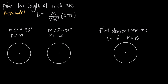In this first example, we've been told that the interior angle measure P is 90 degrees and that the radius is 10. So what we want to think about here is if we have the radius from the center of the circle to the edge of the circle, that radius is going to be 10. And the measure of the interior angle P is 90 degrees.